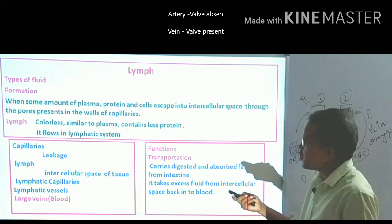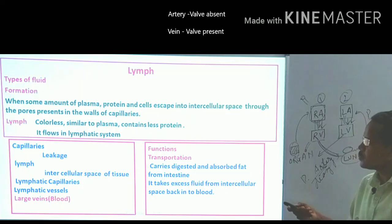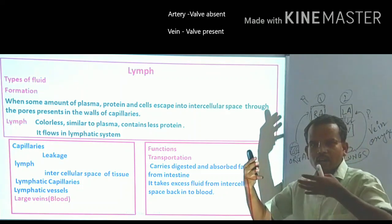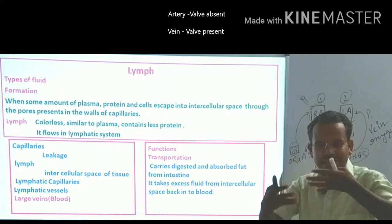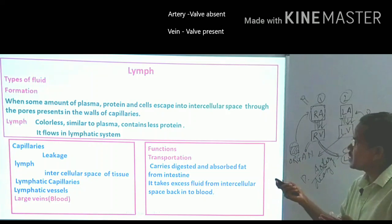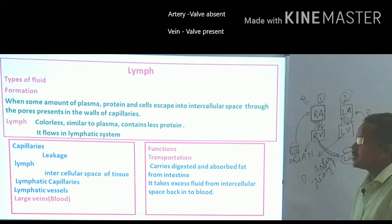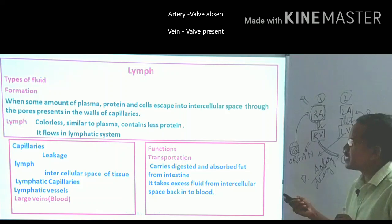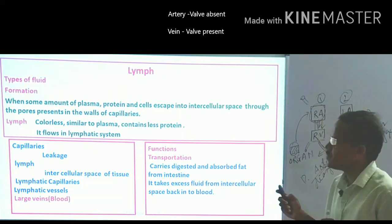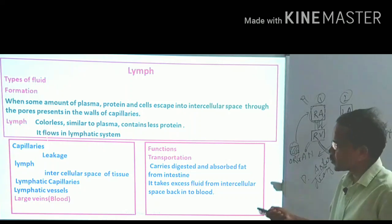Now the lymphatic system: some amount of plasma, proteins, and cells escape into the intercellular space through pores in the walls of capillaries. This leaked fluid is called lymph. Lymph is colorless and similar to plasma, but contains less protein than plasma. It flows in a separate lymphatic system.